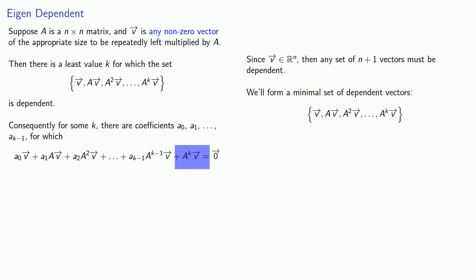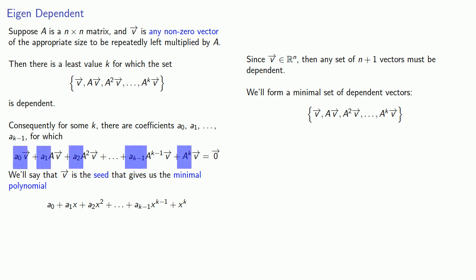And the important thing here is that since A^K V made the set dependent, we can guarantee that it's going to be included in the linear combination. And we'll say that V is the seed that gives us the minimal polynomial, which is the polynomial formed using the coefficients of this linear combination.